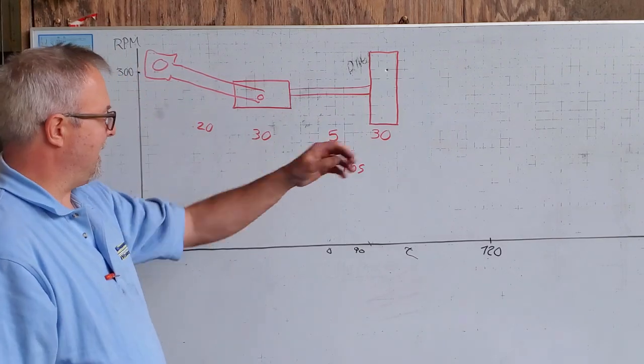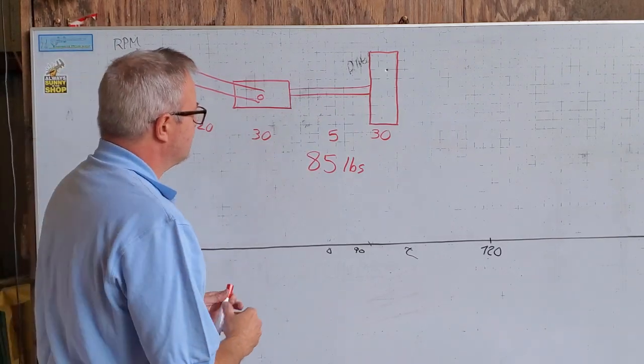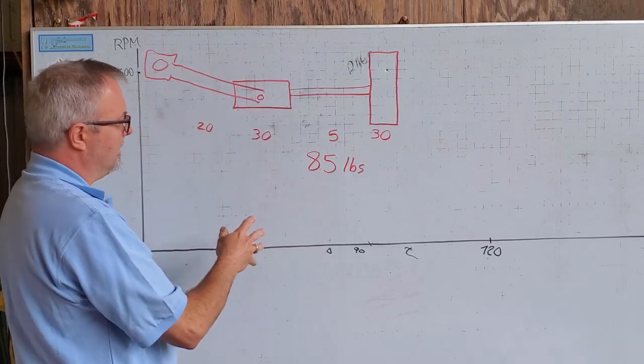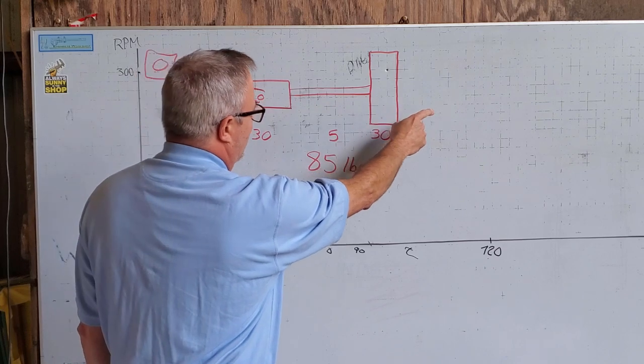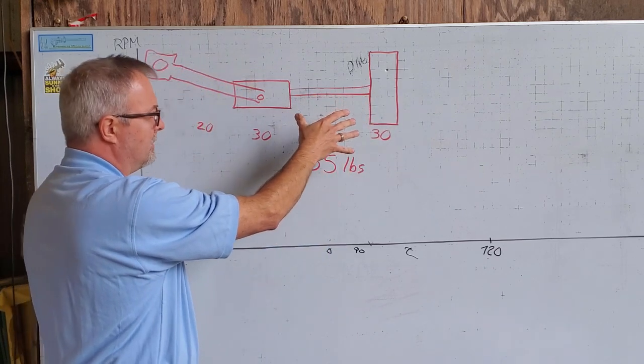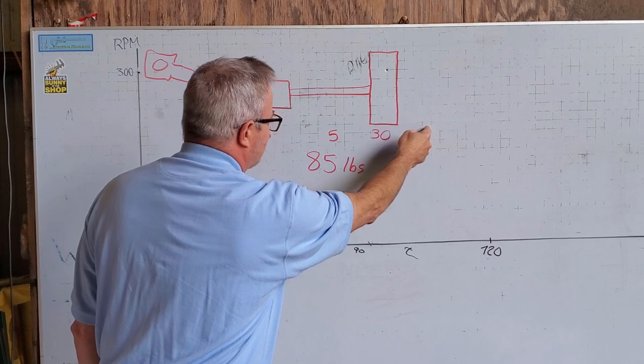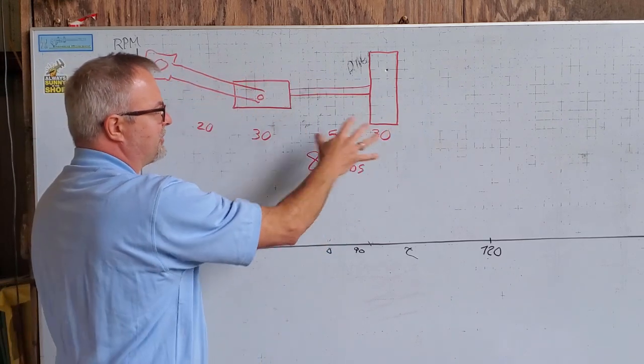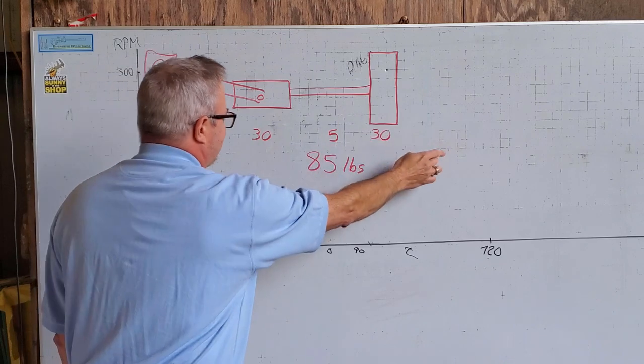That is reciprocating mass. This is not in motion all the time. At the ends of the stroke, all of this is not moving. So we're at one end of the cylinder and we're at the other end of the cylinder. Both cases, eighty-five pounds of mass is not moving.